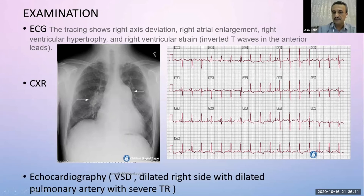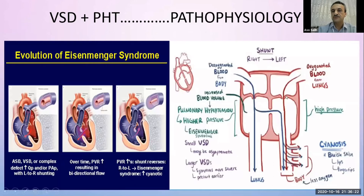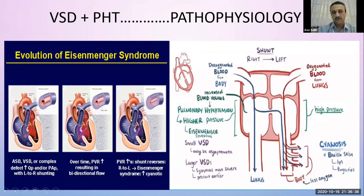Echo findings show VSD with dilated right side, dilated pulmonary artery, and severe tricuspid regurgitation. This patient is progressing toward Eisenmenger physiology, in which the shunt reverses from left-to-right into right-to-left. Eventually there is mixing at the level of the ventricles, and desaturated blood goes to the systemic circulation.